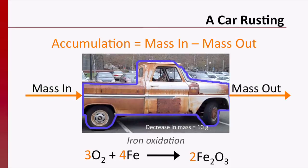Our system, the car, lost 10 grams of mass. This is a negative accumulation. During the rusting process, did any mass enter our system? Yes, the mass due to the oxygen that reacted with the iron on the car's body. In our scenario, where a car is rusted and the rust fell off of the car, has any mass left our system? Yes, the mass of the rust or iron oxide.